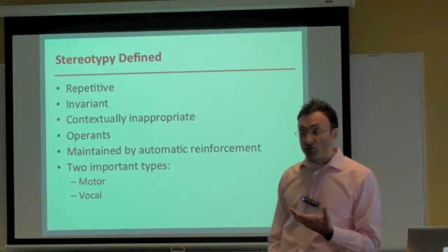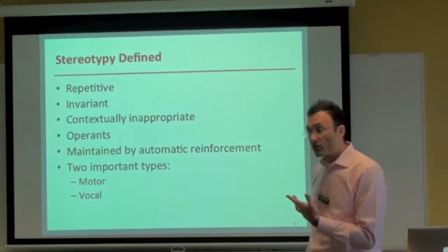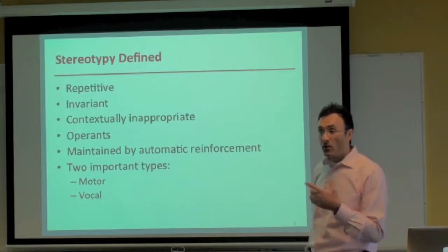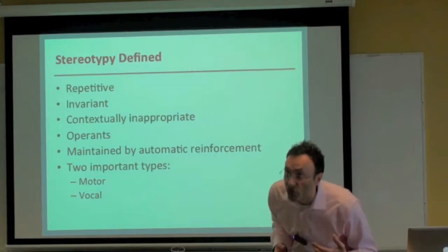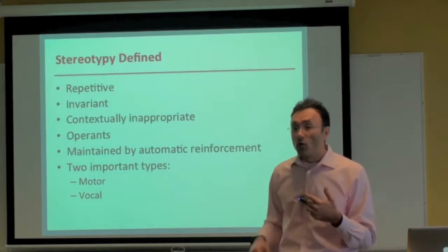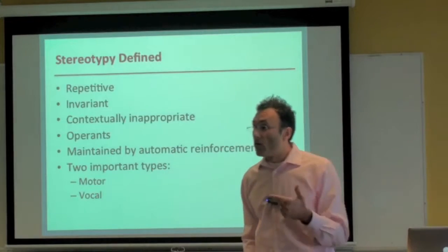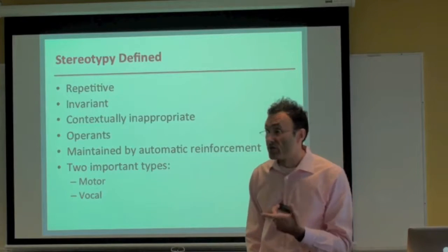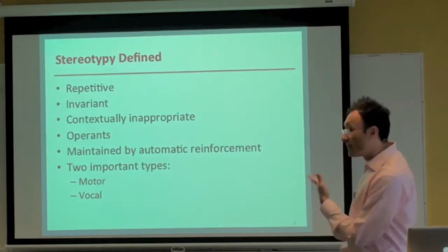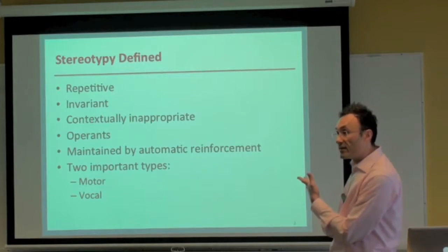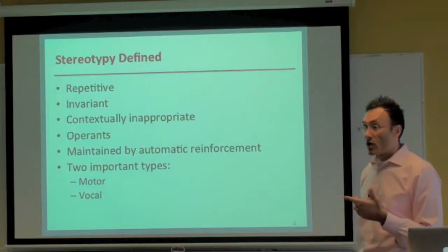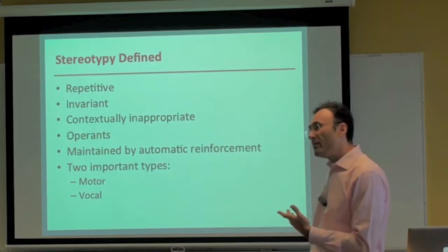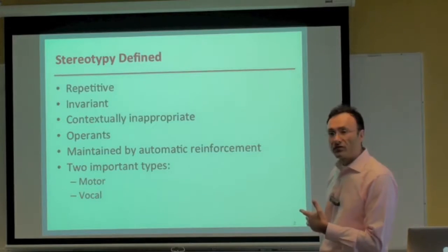If you look through the research on stereotypy, many researchers divide them into two camps: motor stereotypy, where you're using your hands, trunk, or head; and vocal stereotypy, where you're involving the vocal apparatus to produce sound. Vocal stereotypy is more difficult to treat than motor stereotypy because some of the tools we use, like prompting, can't really be used to treat it.